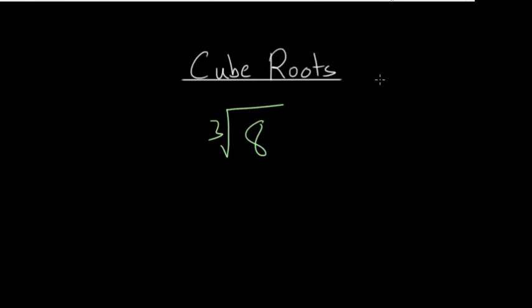In this video I'd like to talk about the concept of cube roots. In this example, we have the cube root of 8, and what this question is asking is: what number multiplied by itself three times would equal 8? In other words, what number X to the third power would give you 8?